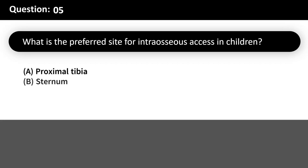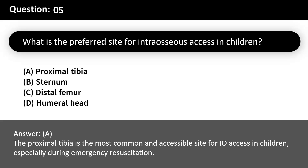What is the preferred site for intraosseous access in children? A. Proximal tibia. B. Sternum. C. Distal femur. D. Humeral head. Answer: A. The proximal tibia is the most common and accessible site for IO access in children, especially during emergency resuscitation.